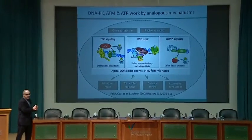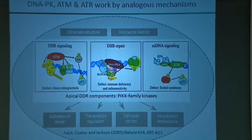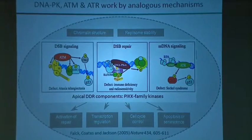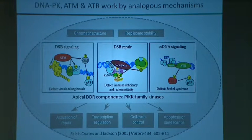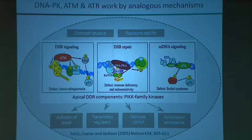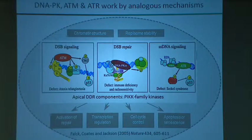Defects in non-homologous end joining also occur in people, causing radiation sensitivity, some cancer predisposition, but also immune deficiency. Our immune system's B and T cells generate the vast repertoire of antibody and T cell receptor diversity by deliberately generating breaks and re-joining genomic segments in different ways. Cells — and people and mice — lacking DNA-PK or Ku cannot carry out this process properly, which is why they have immune deficiency.